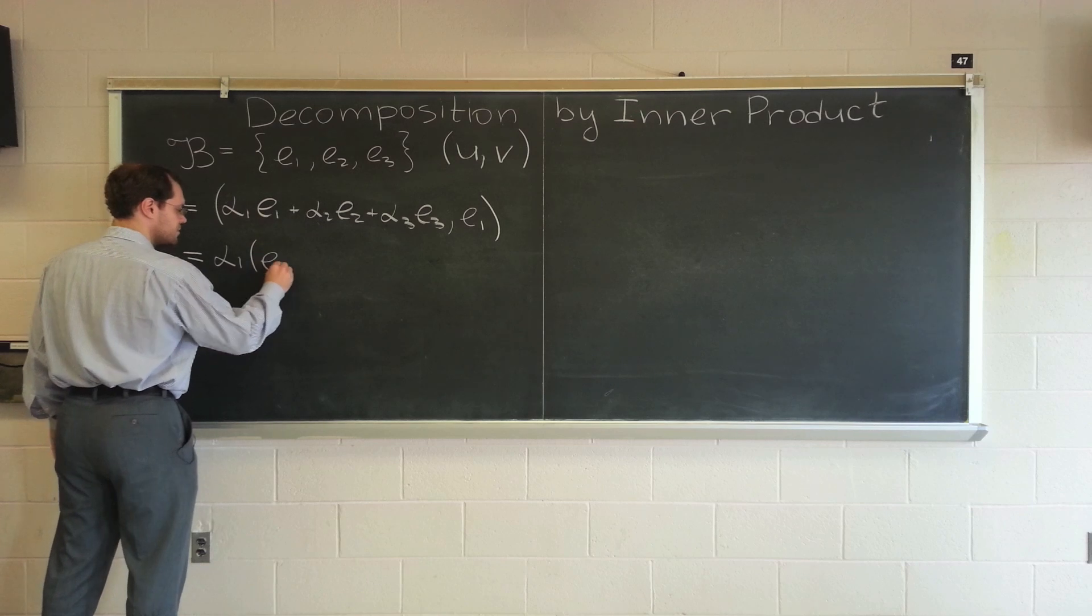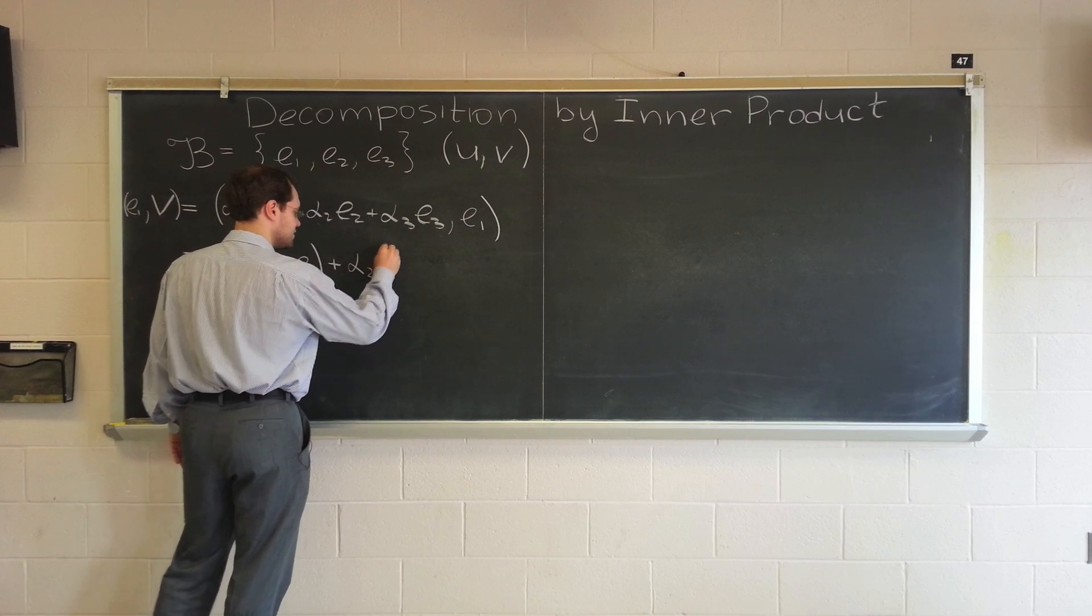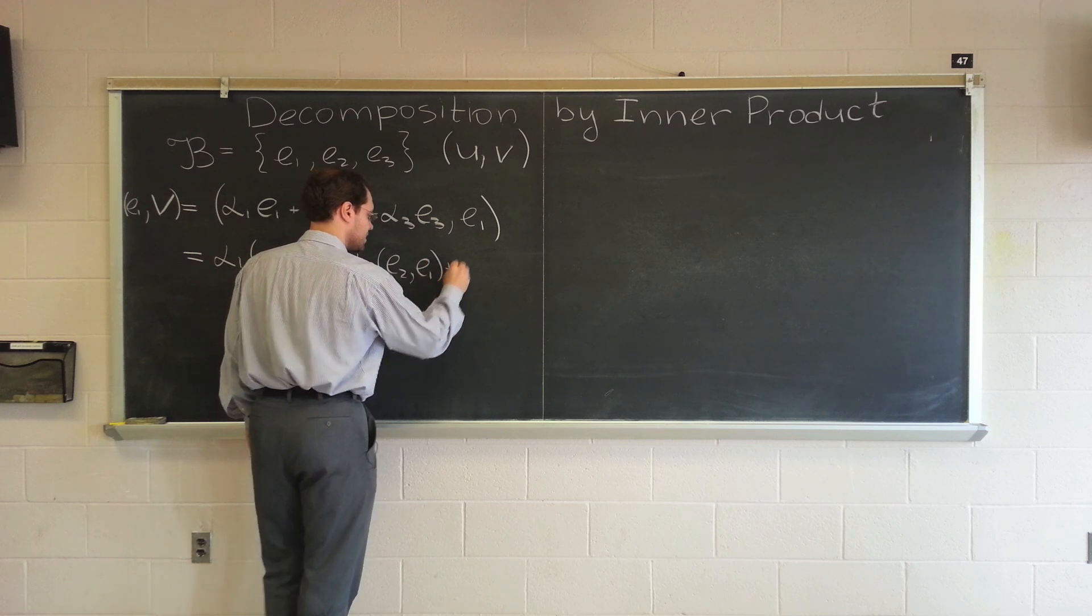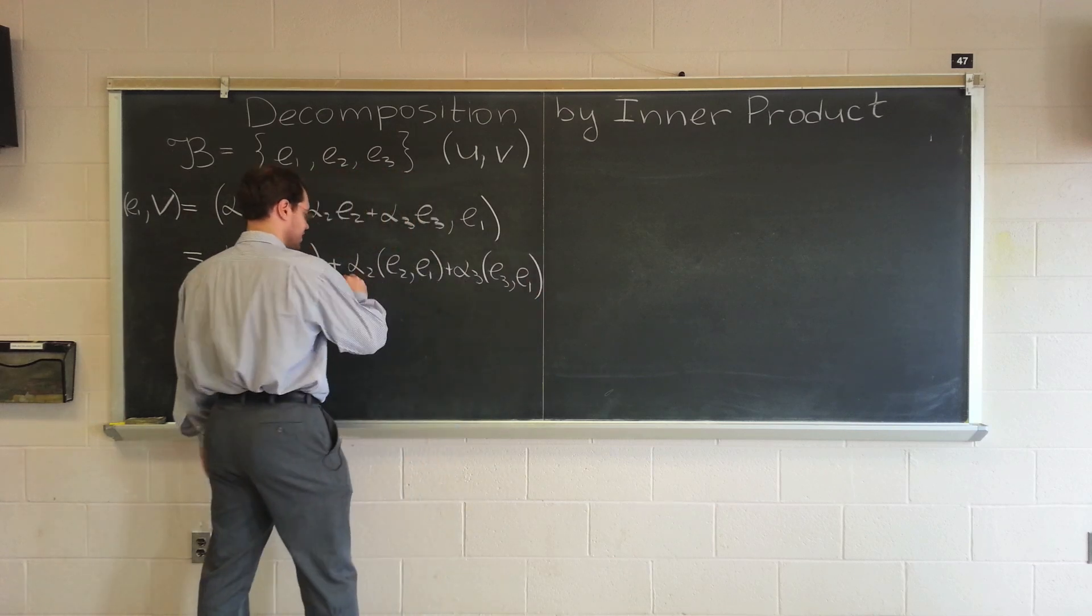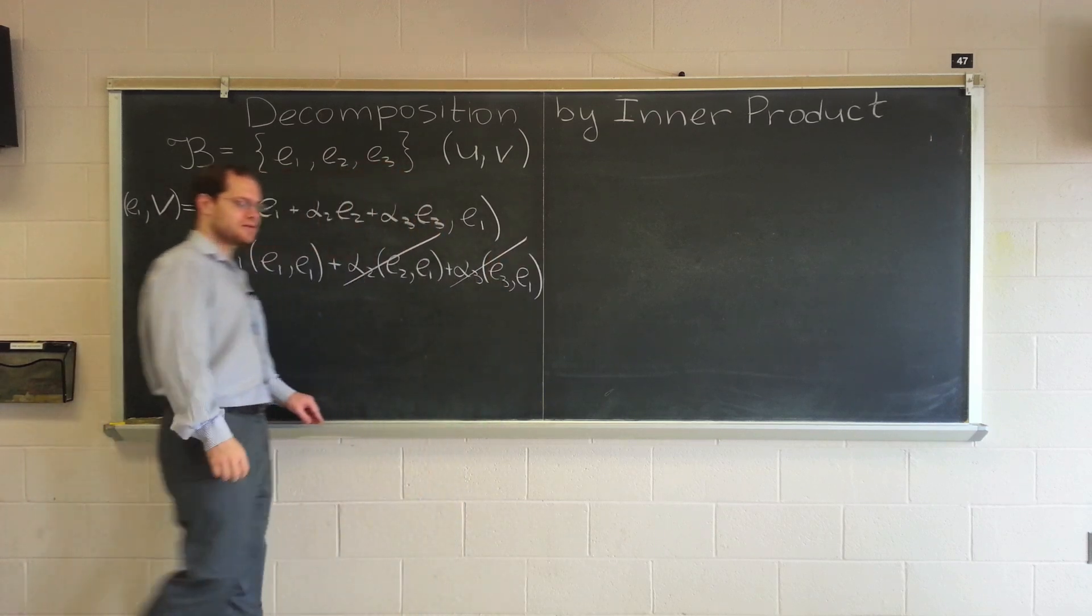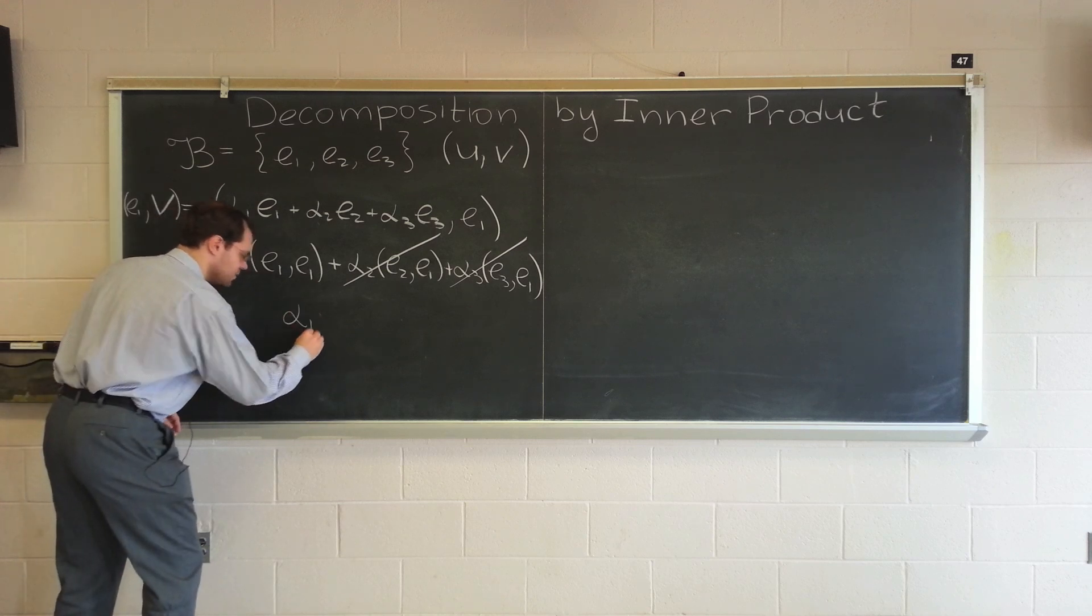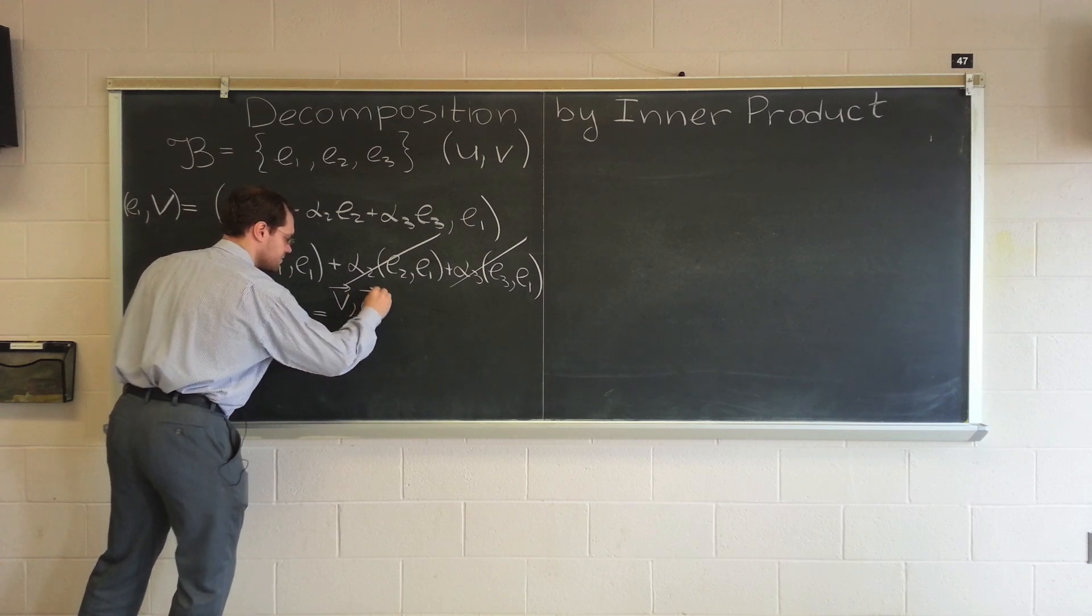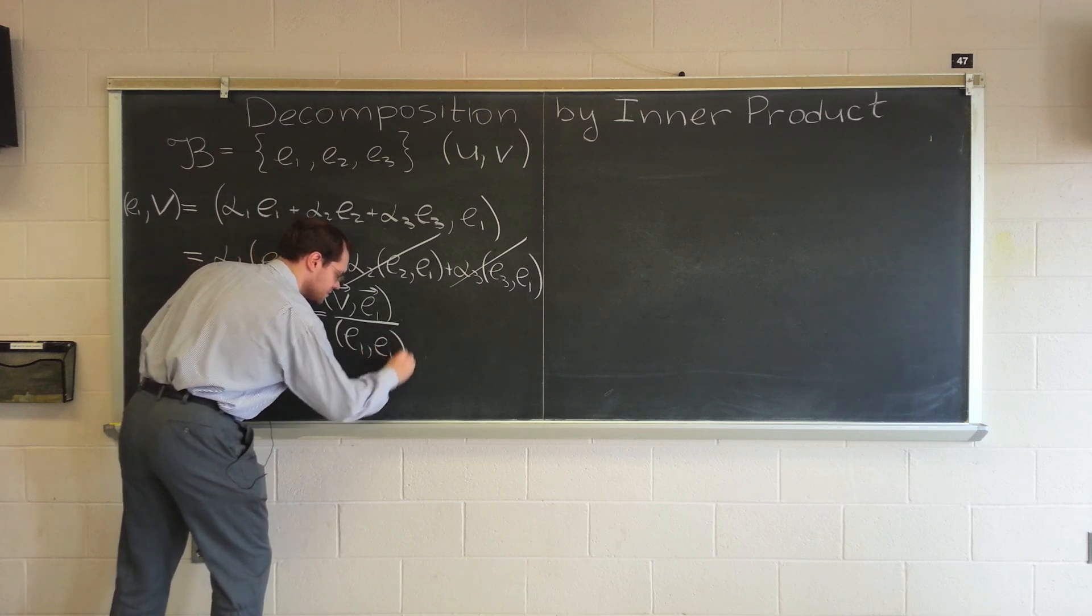Plus alpha2 e2 dotted with e1, plus alpha3 e3 dotted with e1. And this is zero because the basis is orthogonal. This is zero because the basis is orthogonal. There's a single surviving term, which tells us that alpha1 equals v dotted with e1 divided by e1 dotted with e1. Beautiful.